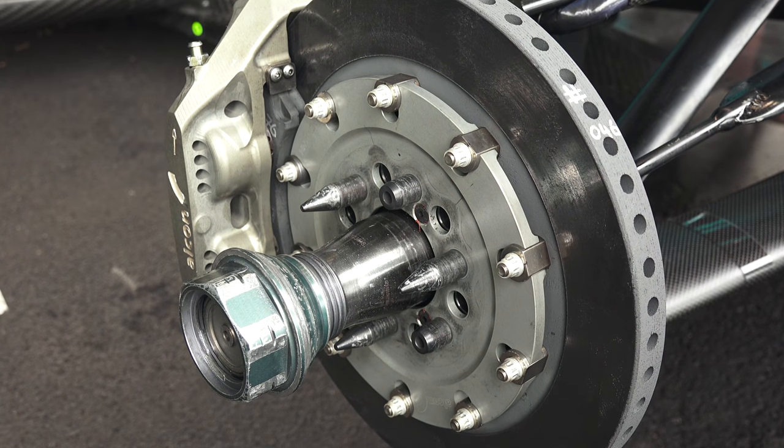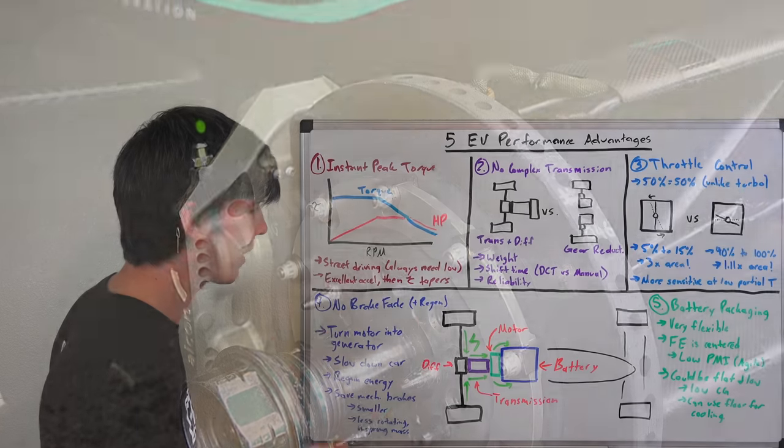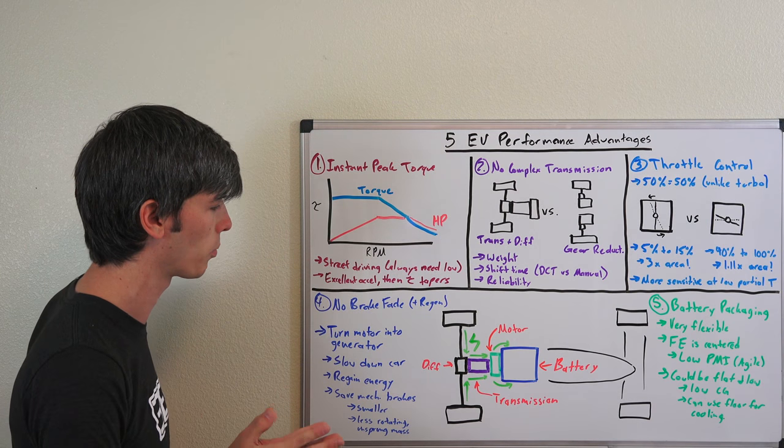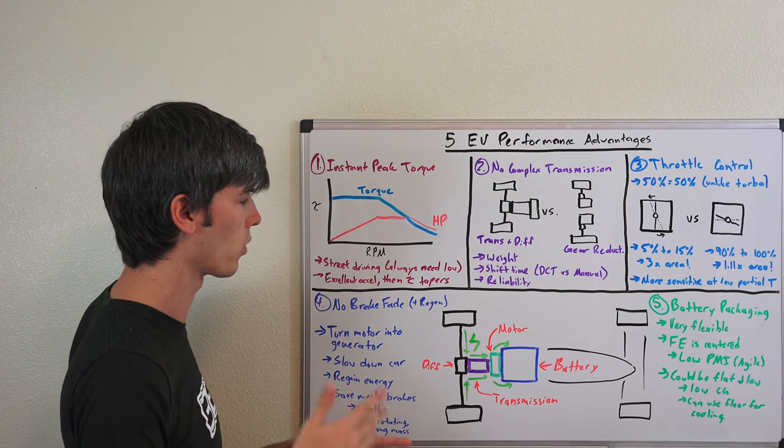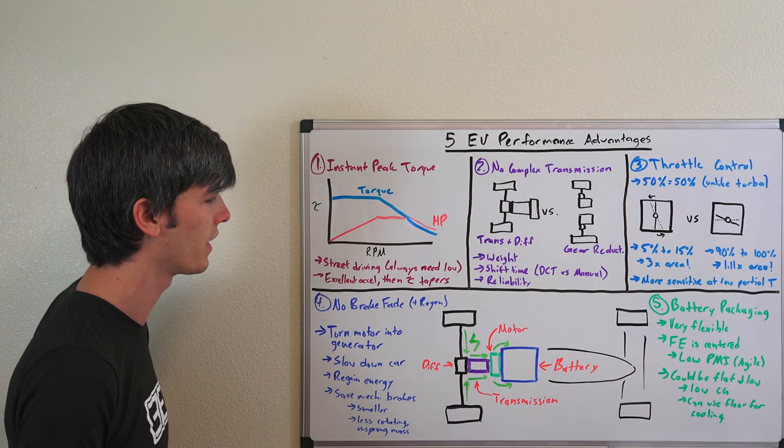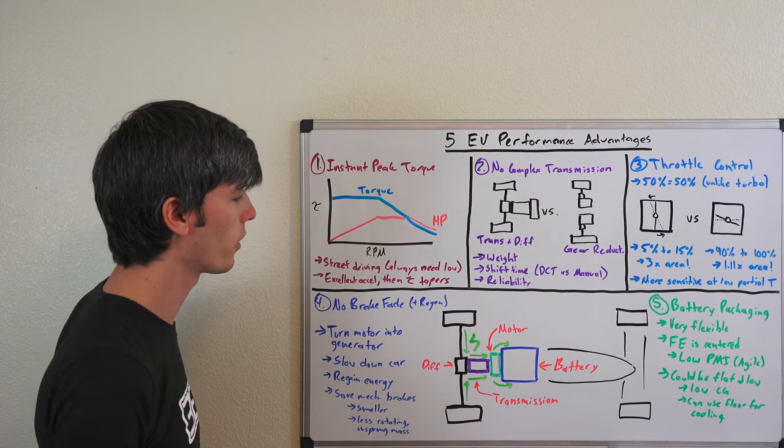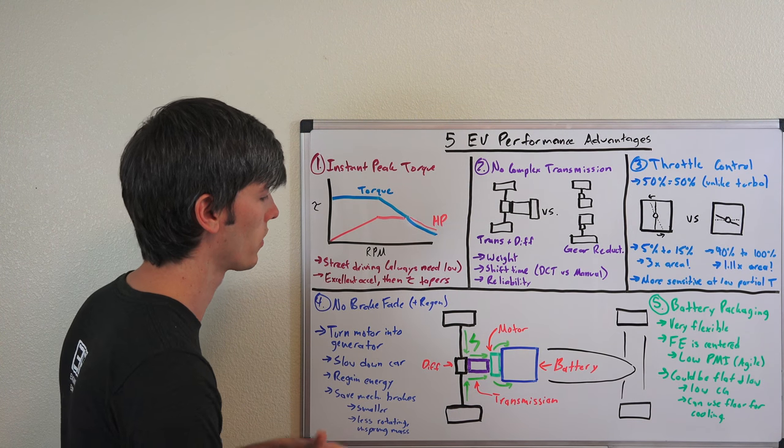This in turn allows you to use smaller brakes - less rotating mass, less unsprung mass - so some benefits of reducing the size of those brakes. You're not as dependent on them, they're going to last longer, they won't be as necessary. You don't have to worry so much about brake fade in an electric vehicle because you can send that heat into the battery and you simply have to worry about the cooling system for the battery and the motors rather than the braking system.